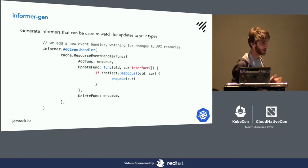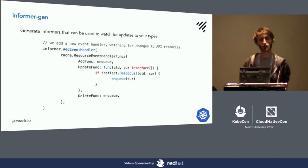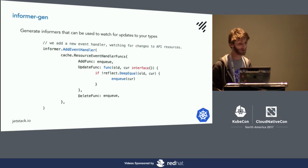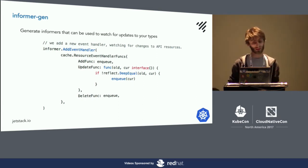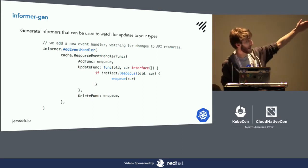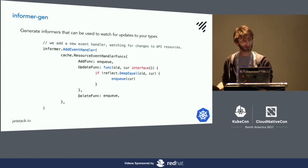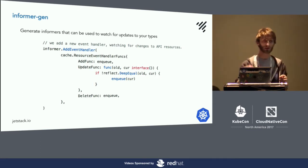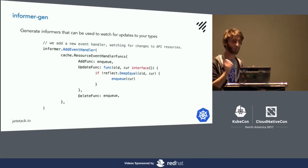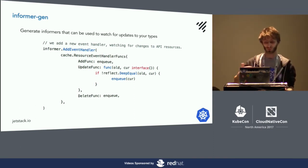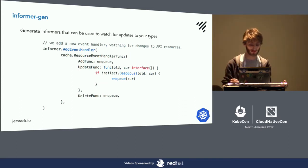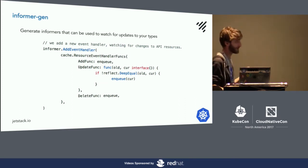The informer generator — you want to know when something in your API server has changed; that is the core of this reconciliation, the desired and actual. We add an event handler: when something has been added, when a new resource is added, we queue it to be processed. When it's updated, we do a quick check to see if it's actually changed — there's no guarantee of only-once delivery here, so this can be called multiple times. That's why you have to always look at the desired and actual state of the world.